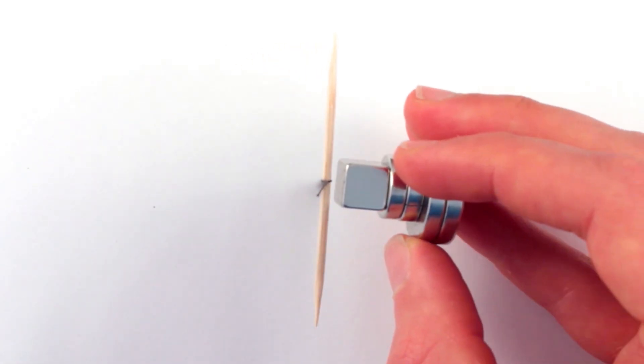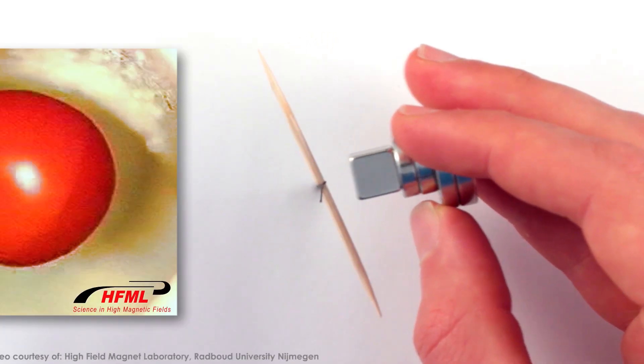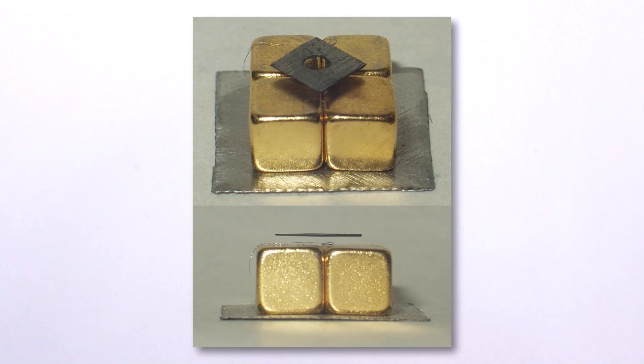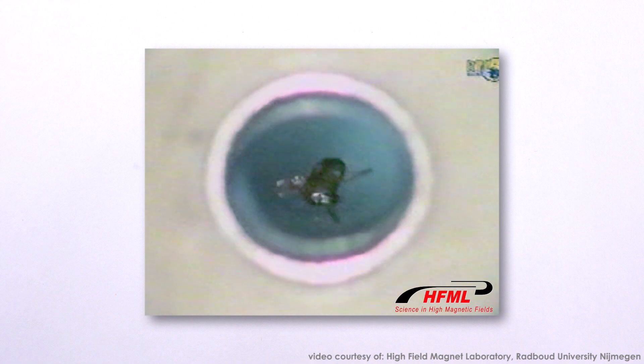As weak as it is, diamagnetism is pretty darn awesome, because it's a repulsive effect. Any diamagnetic material will levitate in a strong enough magnetic field, like this chunk of graphene, or since water is diamagnetic, this frog.